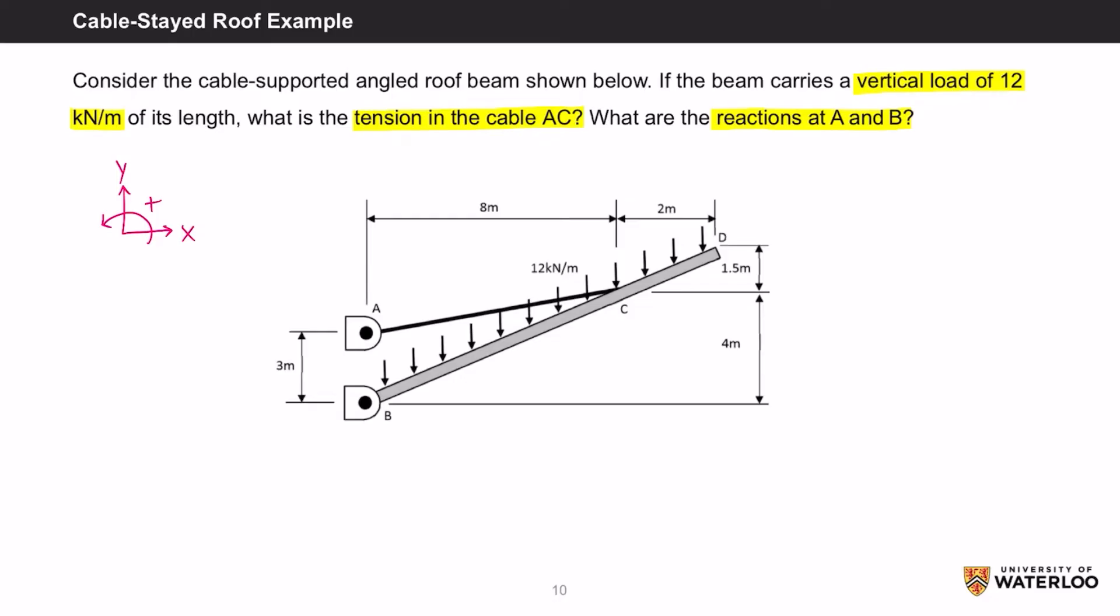Point B is a pin support, which resists translation in the x and y direction. We also have the tension in the cable T, which acts along the angle of the cable.